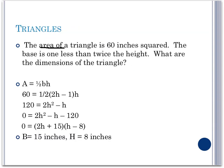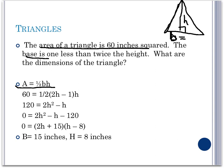In this problem, we are given that the area of the triangle is 60 inches squared. We know that in a triangle, our area is equal to one half base times height. And we also know that our base is given by one less than twice the height. So if we double our height and subtract 1, we will get to the base.